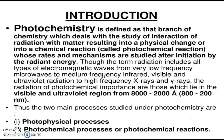Now we will discuss the definition of photochemistry. It is defined as the branch of chemistry which deals with the study of interaction of radiation with matter resulting into a physical change or into a chemical reaction. This is also called photochemical reaction and photophysical reaction whose rates and mechanisms are studied after initiation by the radiant energy.